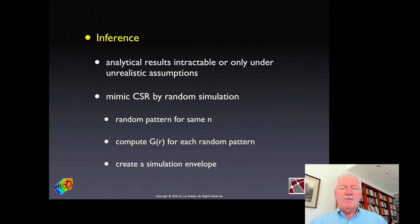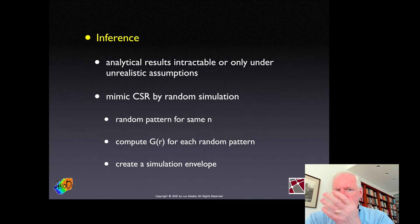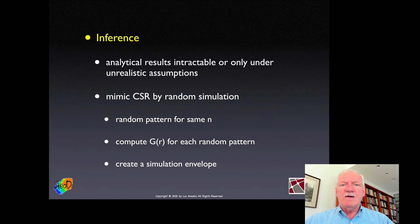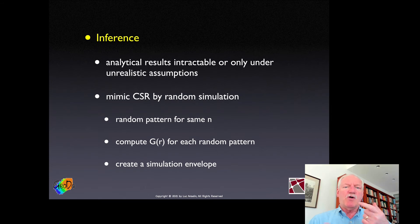For inference, analytical results beyond drawing the theoretical function are hard to come by, or only work under very strict and unrealistic assumptions. So we use the simulation approach, which is easy. We have the number of points n, use uniform random numbers for x and y coordinates, create 99 or 999 random point patterns, and for each get our G function. We then look at the combined set of functions and for each distance take the maximum, minimum, or a quantile, creating what we call a simulation envelope.